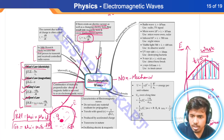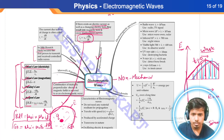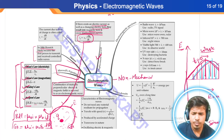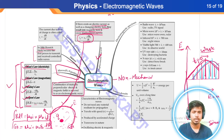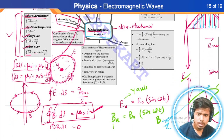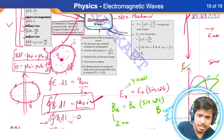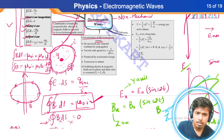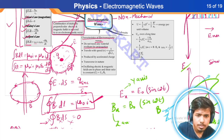All these laws — Gauss's law, Faraday's law, and Ampere's law with displacement current — are called Maxwell's laws, although we have already talked about them in detail. Now, some of the characteristic properties of electromagnetic waves. First of all, it does not need a medium to propagate.